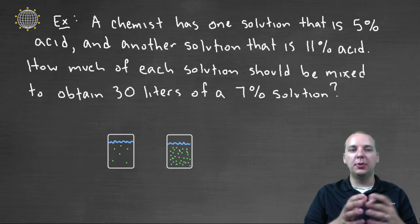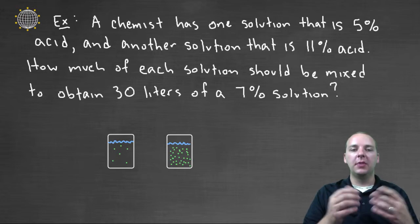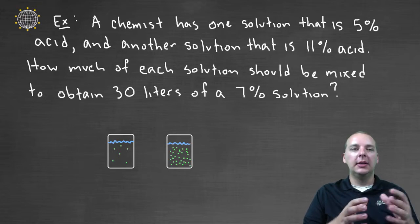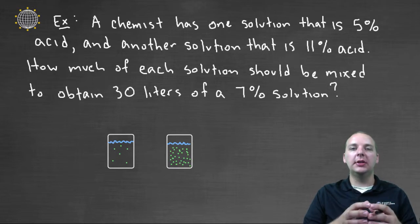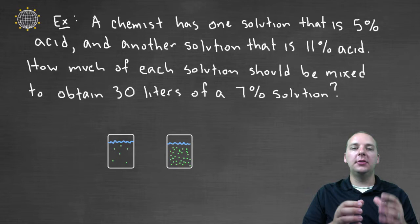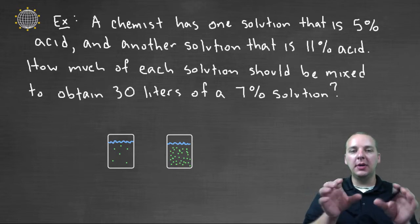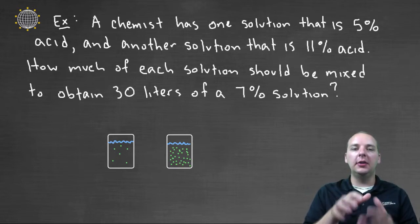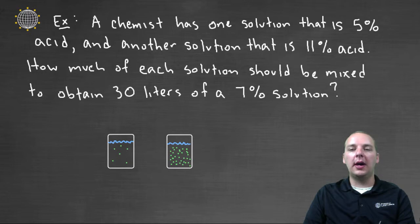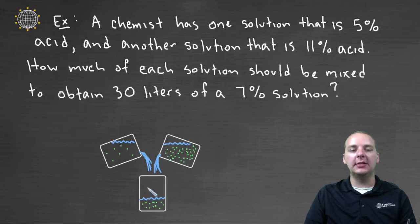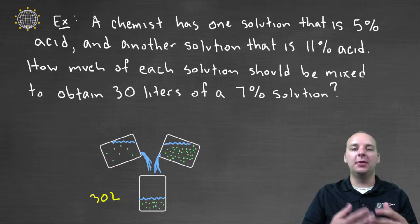Let's take a look at a typical example. A chemist has one solution that is five percent acid — that's on the low end — and another solution that's eleven percent acid — that's on the high end. How much of each solution should be mixed together to get thirty liters of a seven percent solution? We want to mix these two together to get a total of thirty liters that has a seven percent mixture of acid.